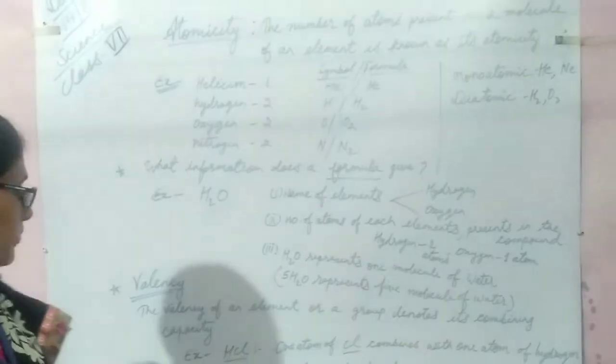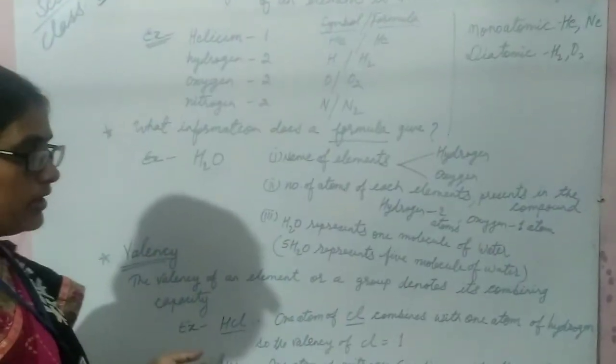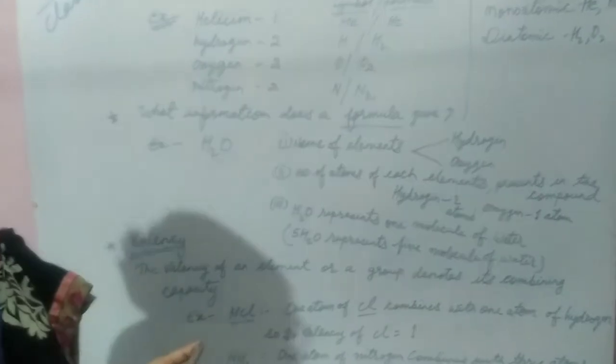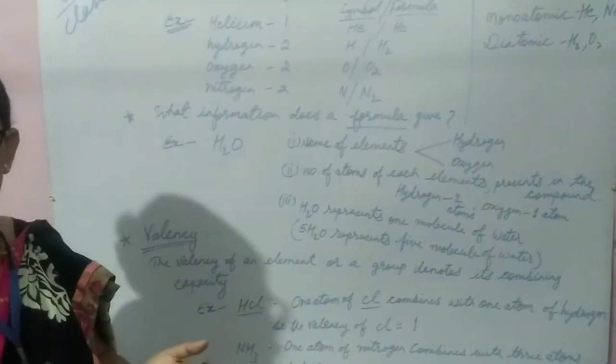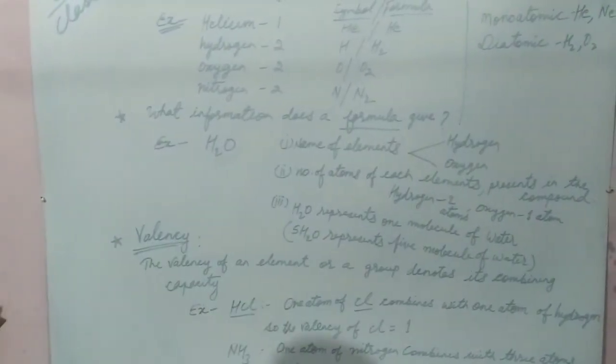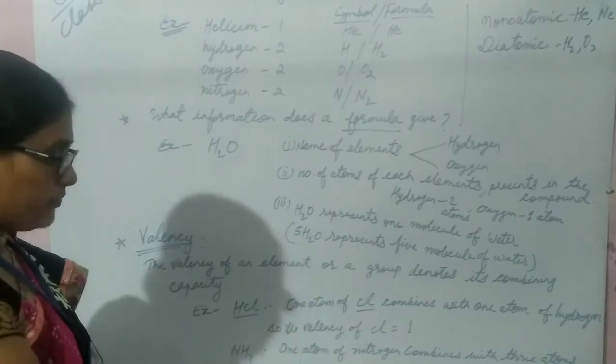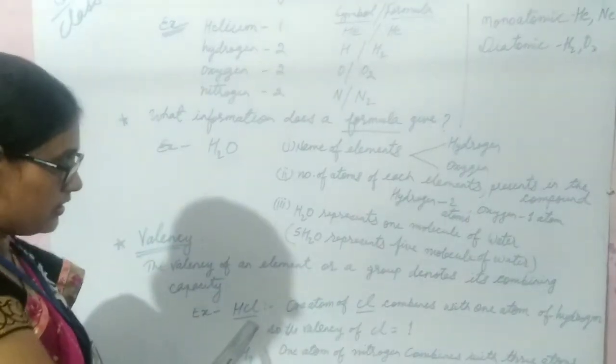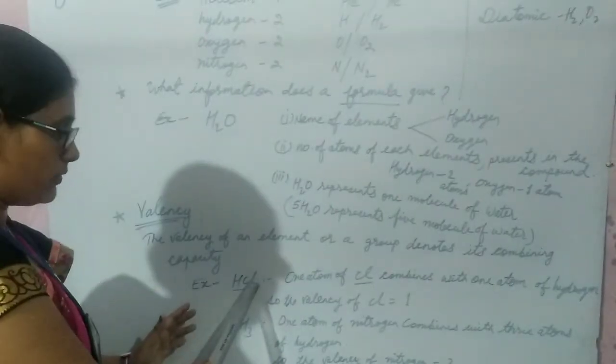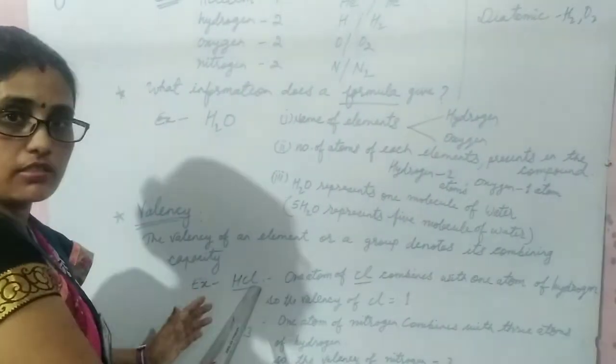Now, valency. The valency of an element or a group denotes its combining capacity. Let's take an example of hydrochloric acid, formula HCl. In HCl, one atom of chlorine combines with one atom of hydrogen, so the valency of chlorine is one.